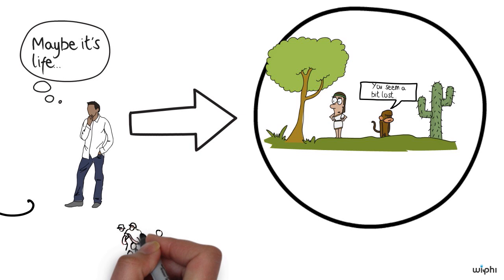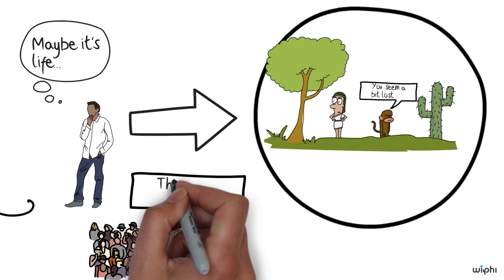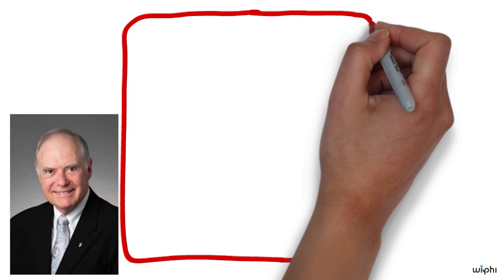And many people think that this view is plausible because they say that our preference for sentience is no different from a preference for human beings or, say, white people or men. These are all forms of prejudice for one group over another based solely on membership in a particular biological category.